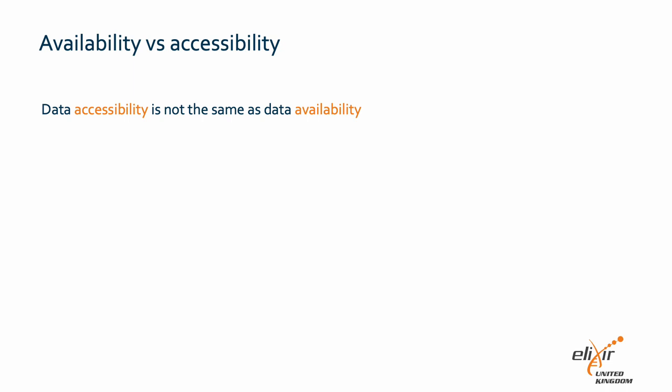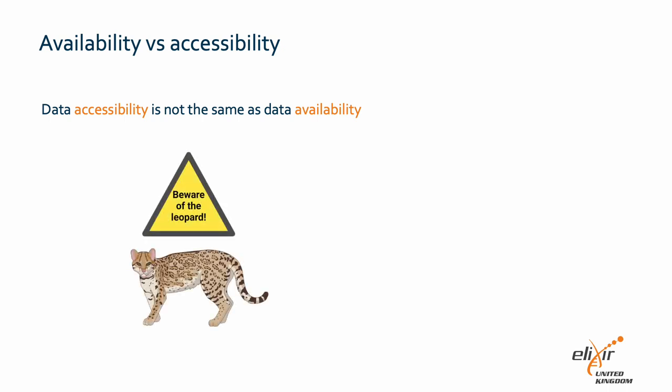We have mentioned accessibility a few times now, and it is important to reiterate that accessibility and availability of data are not the same thing. Data can be theoretically available without being accessible. Douglas Adams articulated this well in The Hitchhiker's Guide to the Galaxy. When the plans for Arthur Dent's house to be demolished are made available, they are located in a dark cellar with no stairs, placed in the bottom of a locked filing cabinet, stuck in a disused lavatory with a sign saying 'Beware of the Leopard.' Arthur theoretically had access to the plans — they were available — but in reality could not view them without surmounting significant difficulties. They were not accessible.